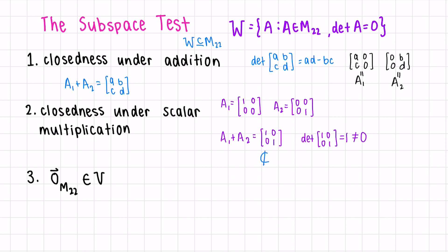So therefore, this new matrix is not included in W. Therefore, W is not a vector space. It's still a subset of M22, but it is not a subspace.